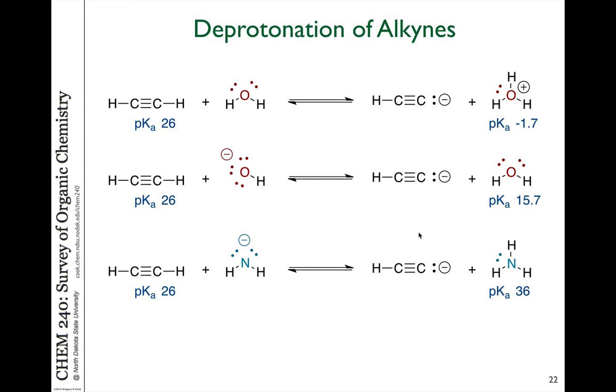Now to give you an idea about how we can deprotonate using standard bases, with a pKa of 26 we need something that can be protonated. If that reacts with neutral water, the pKa of alkyne is 26, and the conjugate acid would be hydronium with pKa of minus 1.7. Obviously this is the stronger acid, so this equilibrium will lie far to the left and this reaction would not be productive.